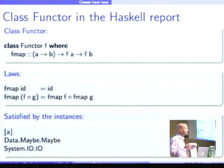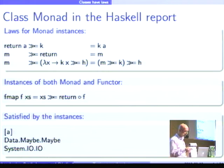And the report doesn't give any proof of this fact, but I'm sure proofs can be found somewhere. Second class is Monad. I don't give the methods. You know the return and bind, of course. Satisfies these three laws. Return is from unit and some associativity.